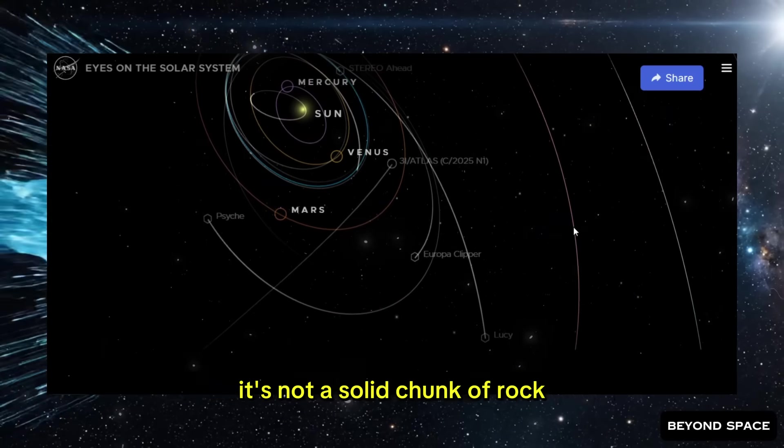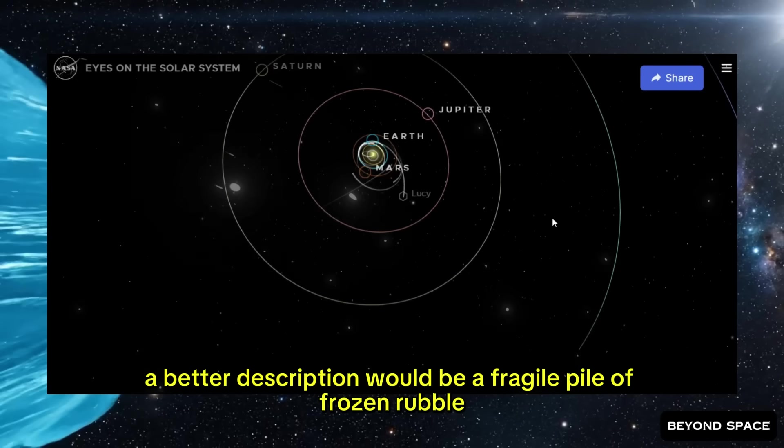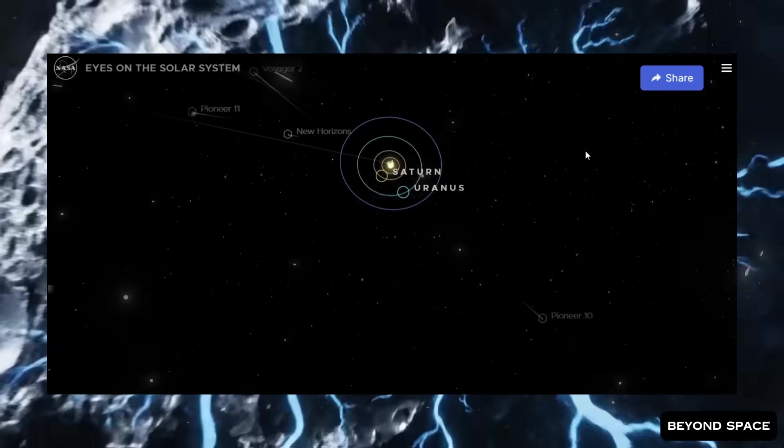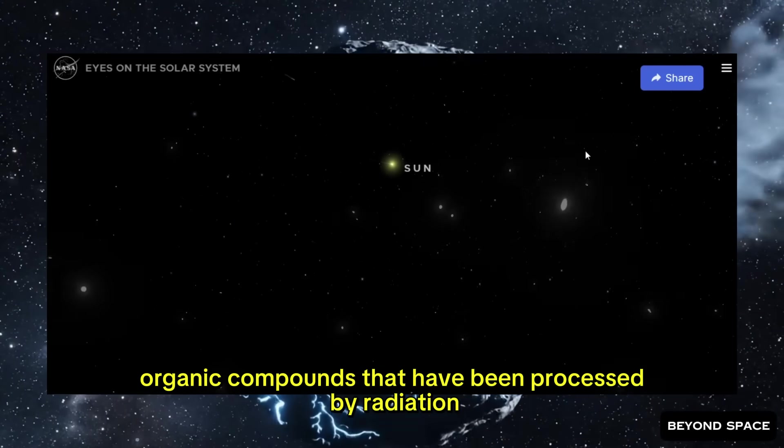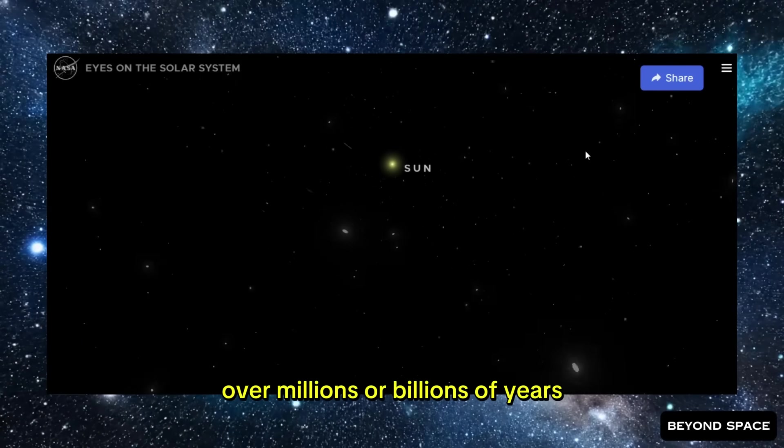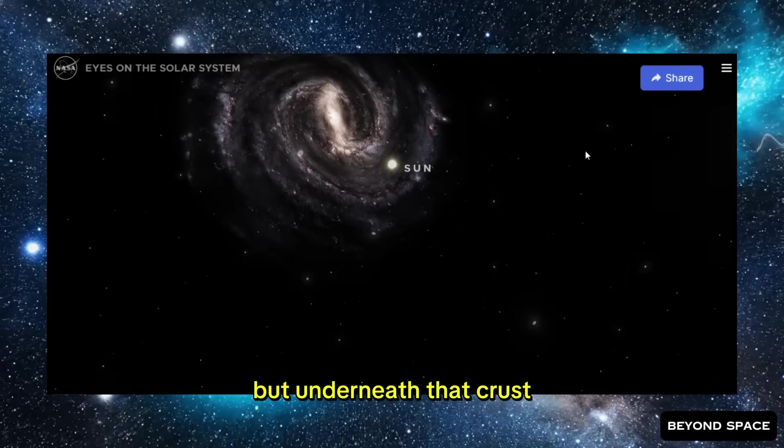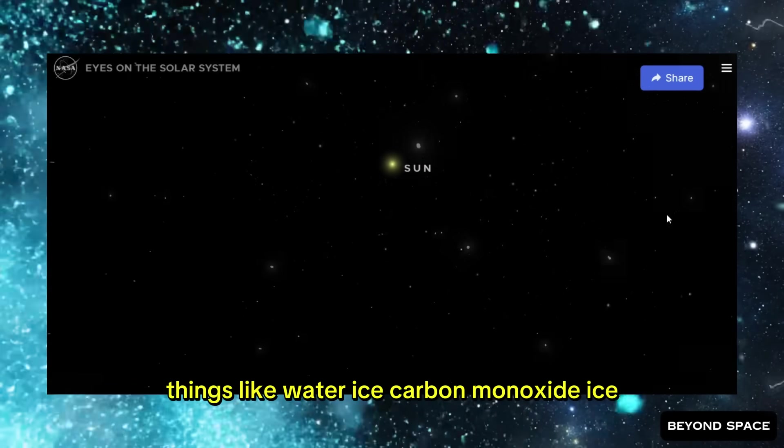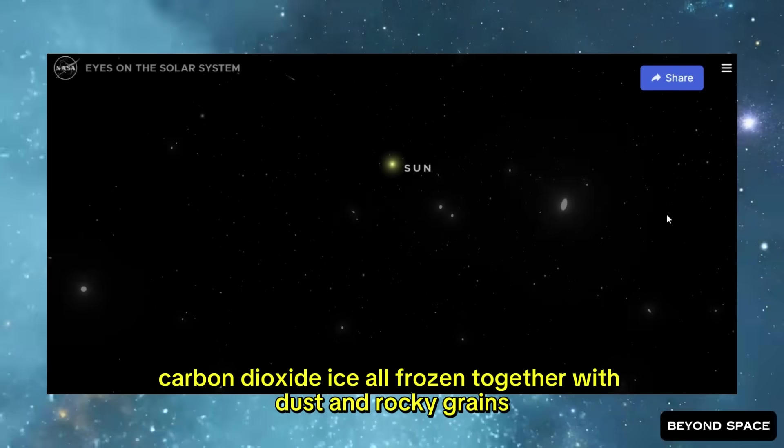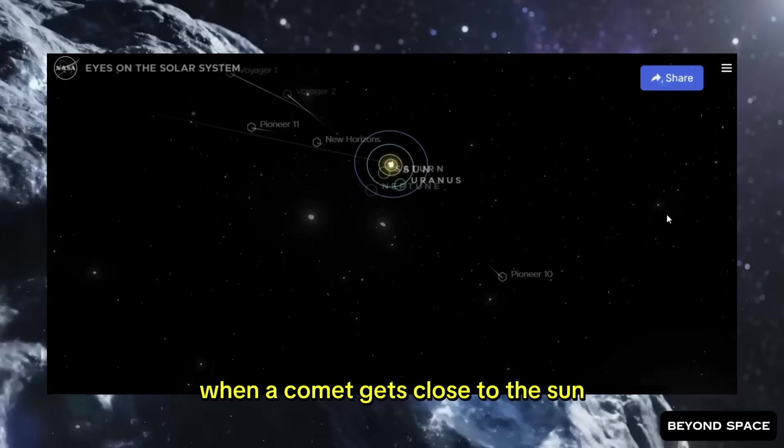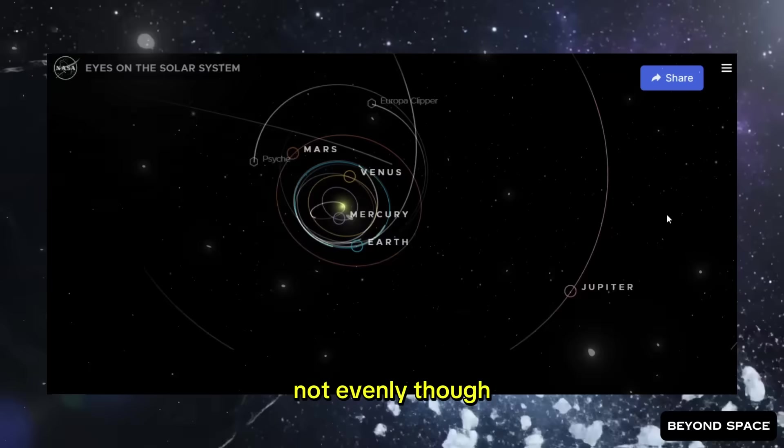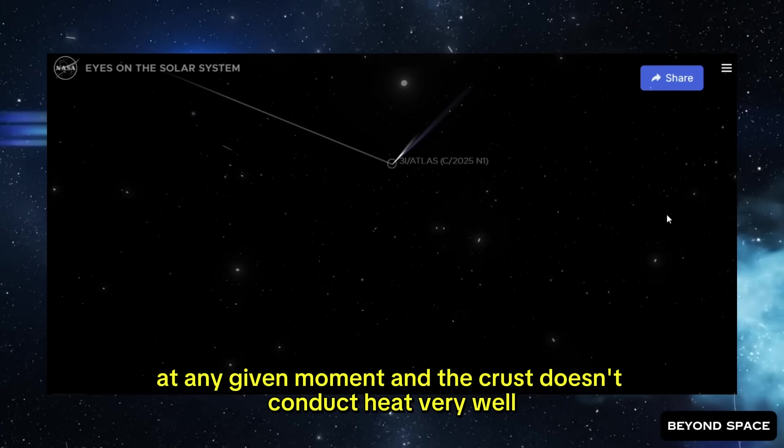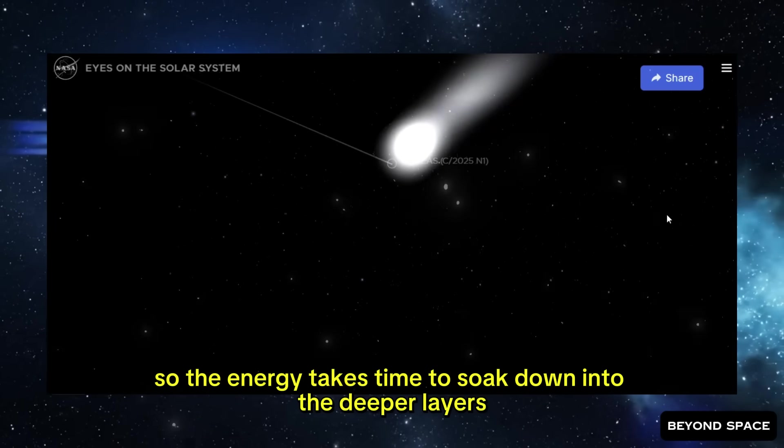It's not a solid chunk of rock. It's more like a dirty snowball. Or maybe a better description would be a fragile pile of frozen rubble barely held together by its own weak gravity. The surface is covered with a crust of dark material, organic compounds that have been processed by radiation over millions or billions of years. But underneath that crust, there are pockets and layers of volatile ices. Things like water ice, carbon monoxide ice, carbon dioxide ice, all frozen together with dust and rocky grains. When a comet gets close to the sun, that ice starts to heat up. Not evenly, though. The sun only directly heats whatever side is facing it at any given moment.